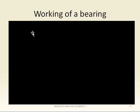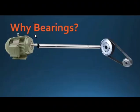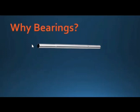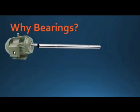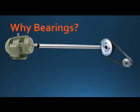Let us understand why we need to use bearings. Consider a prime mover such as a motor or generator — it has a shaft that is coupled to a longer shaft. If you couple shafts directly, wear and tear may take place between the connected surfaces.